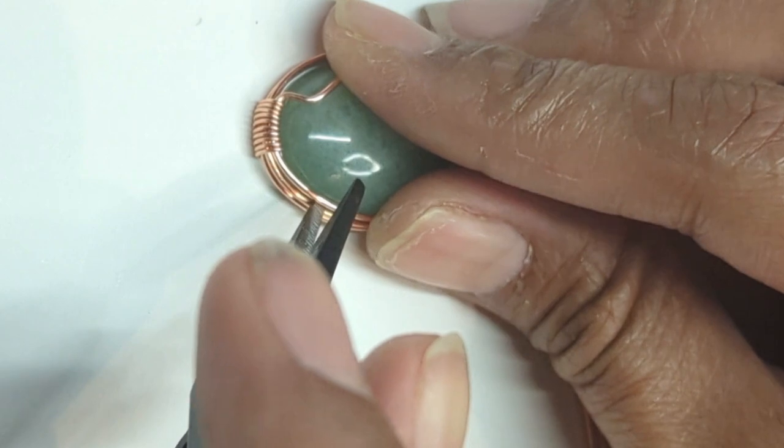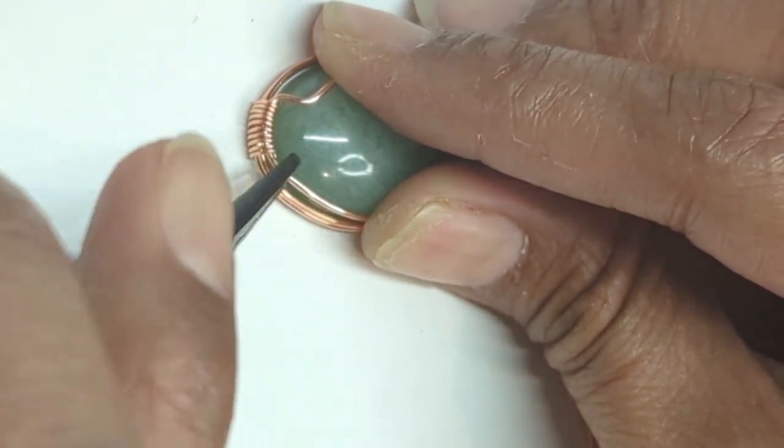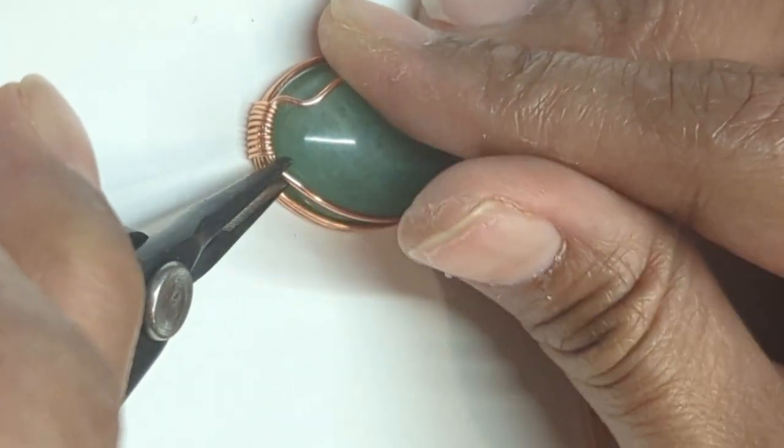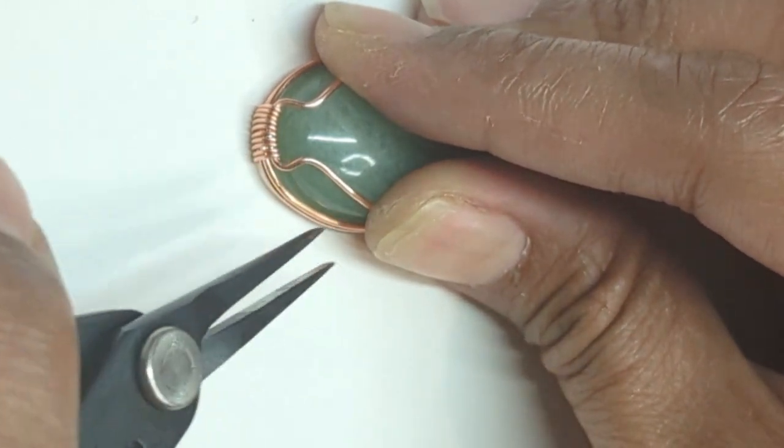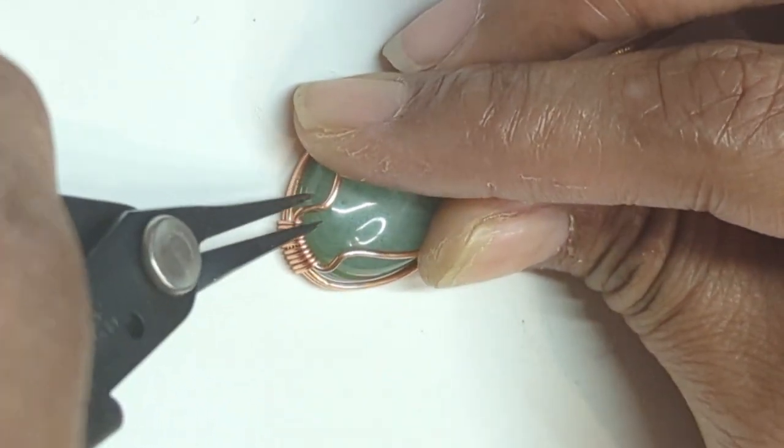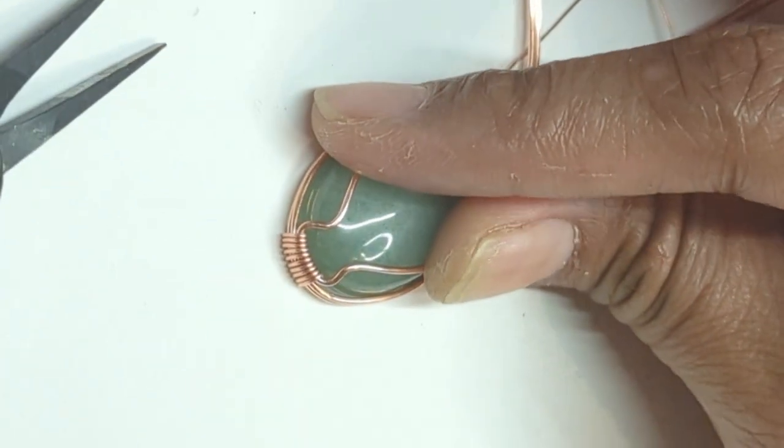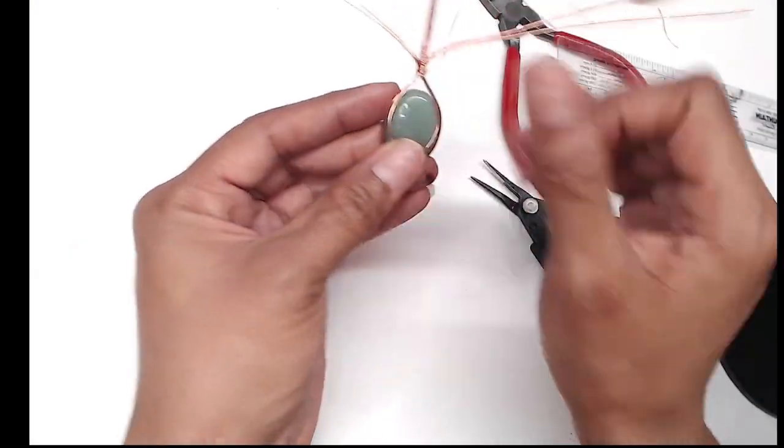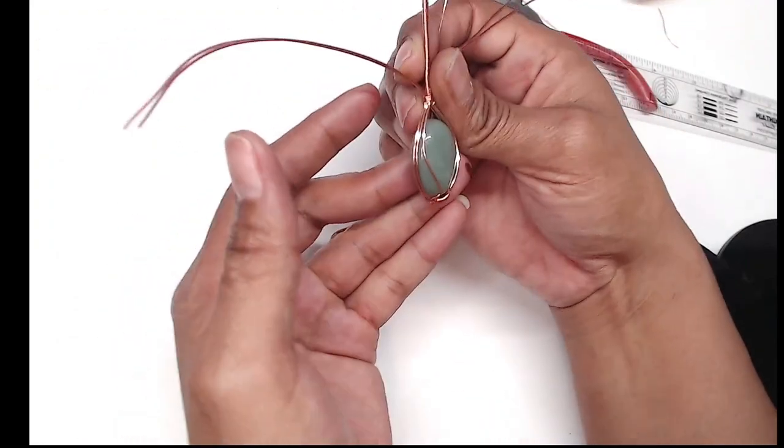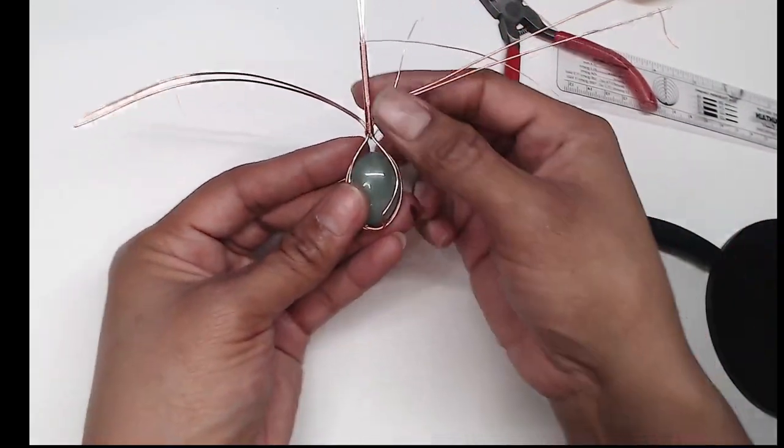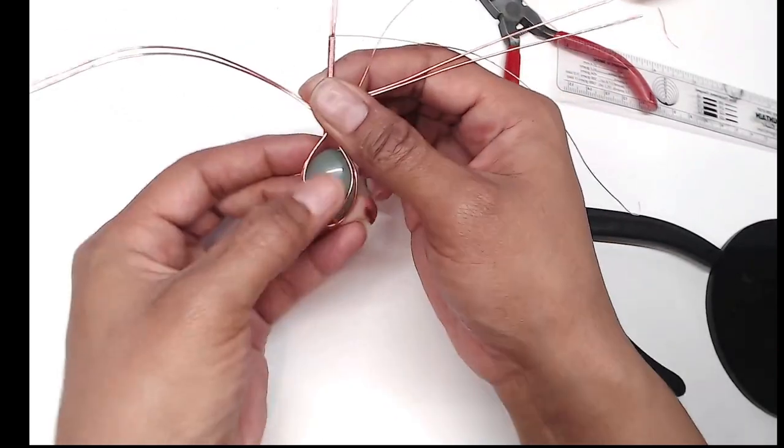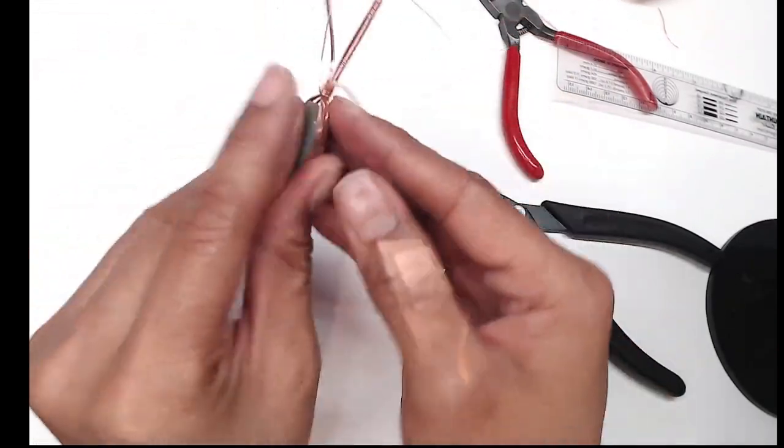Later you can play with this and make the top area come out a little bit more, but for now just hold it down. You could tweak it later. You should end up with something like this and now we have a way that the stone is being held from the front. But we still need to find a way to hold it from the back.